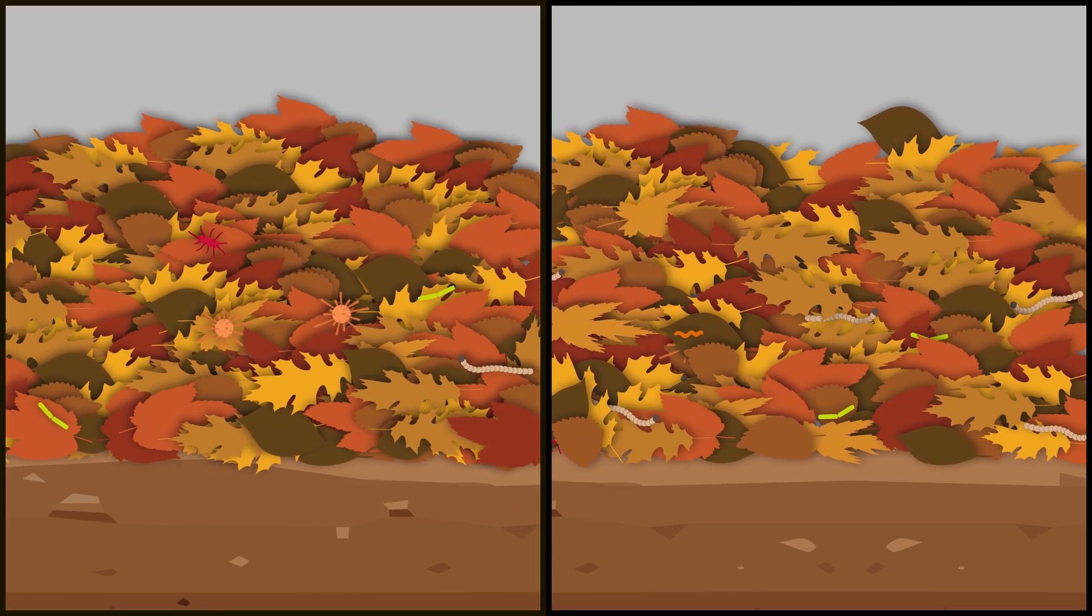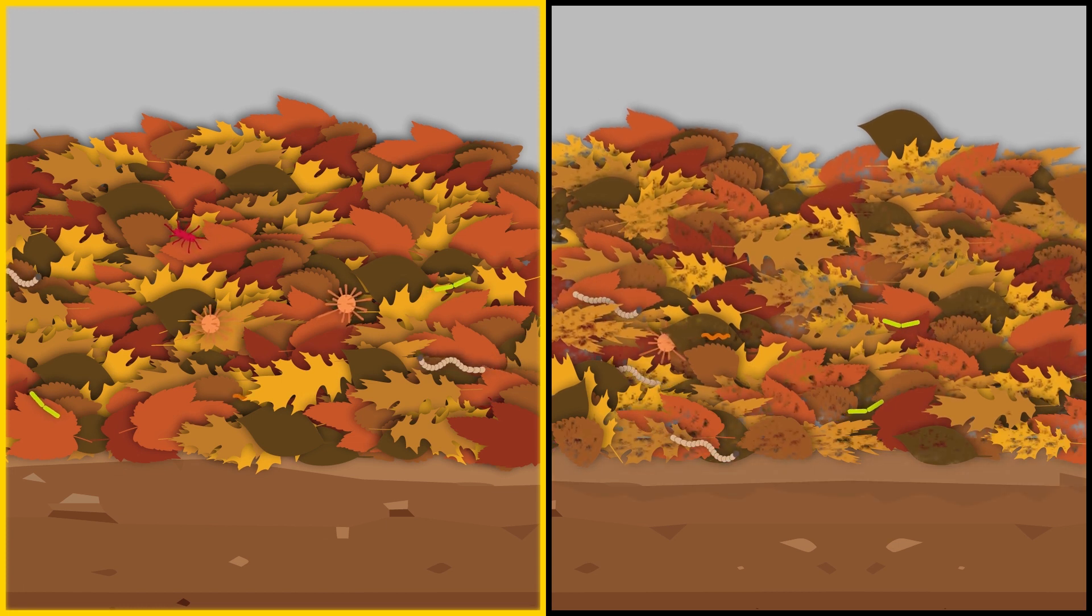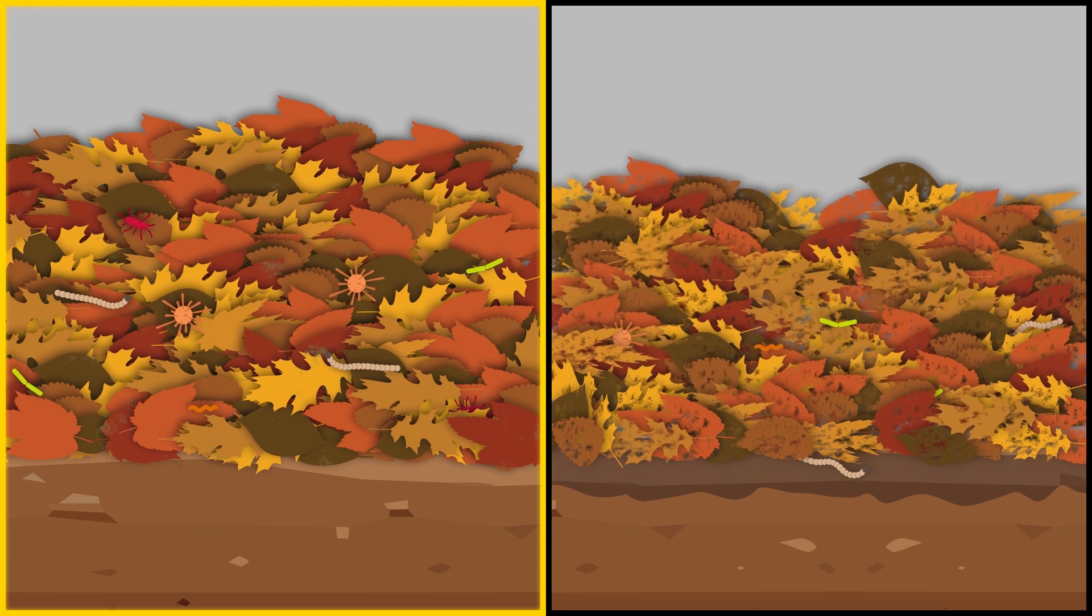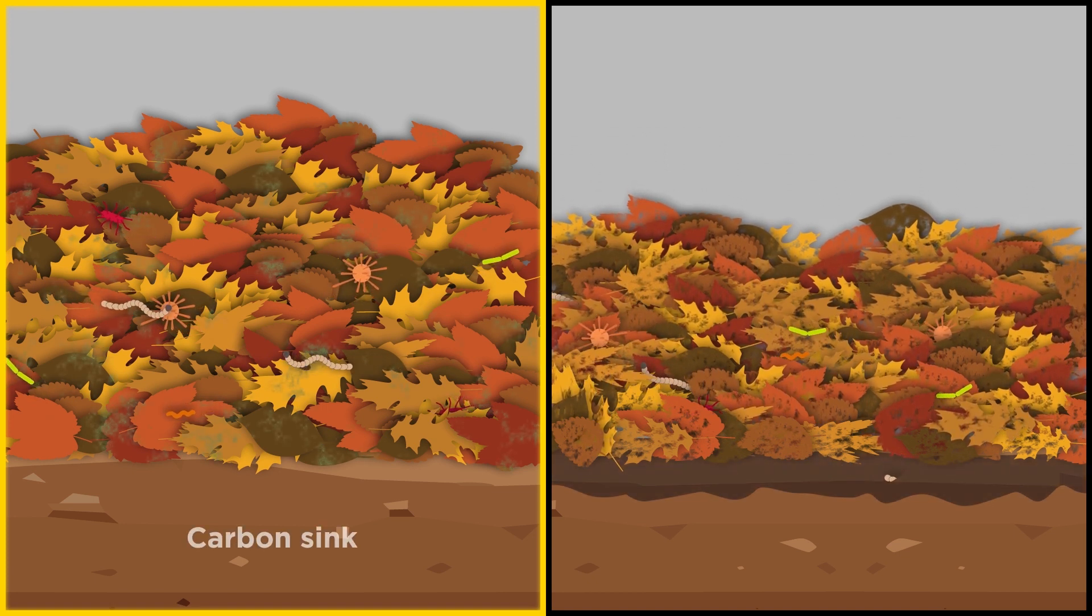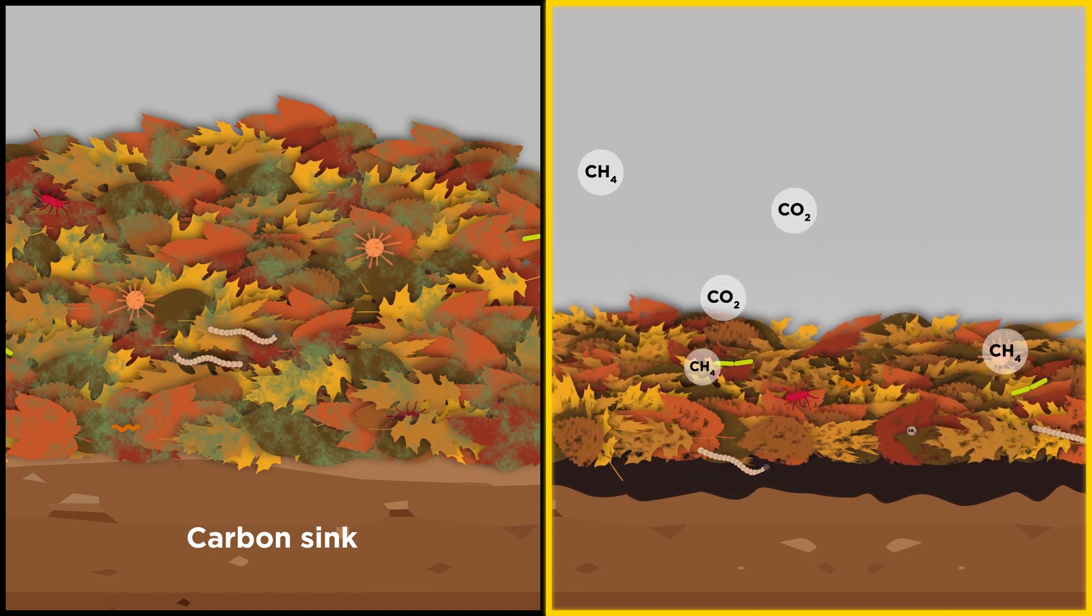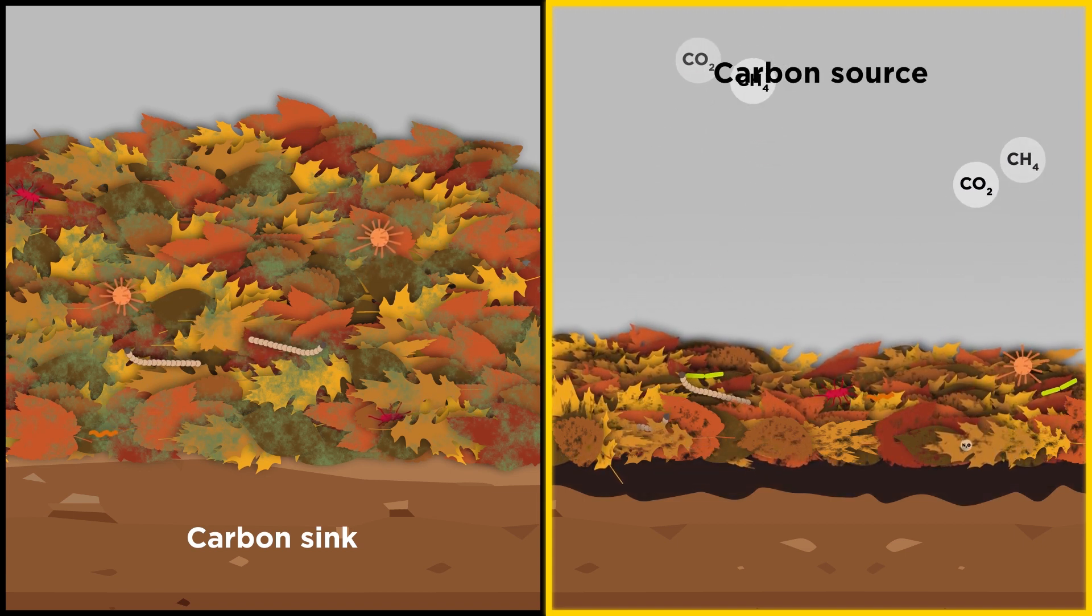Areas with slow rates of leaf litter decomposition, usually due to unfavorable decomposition conditions like climate or pH, may act as carbon sinks. In contrast, areas with favorable decomposition conditions may act as carbon sources.